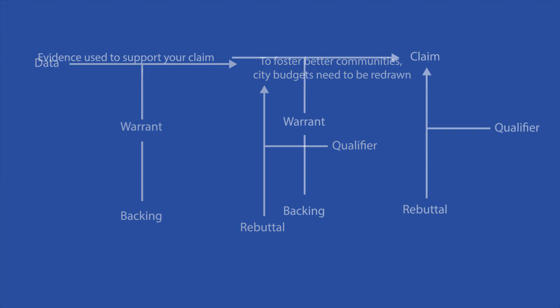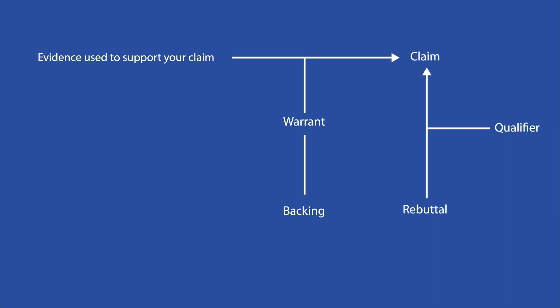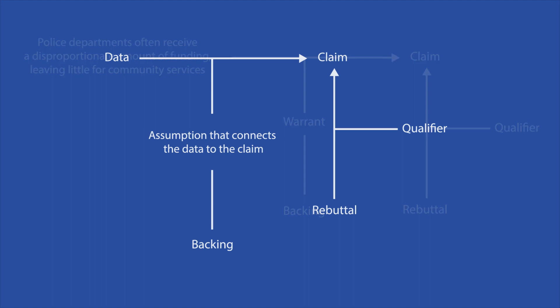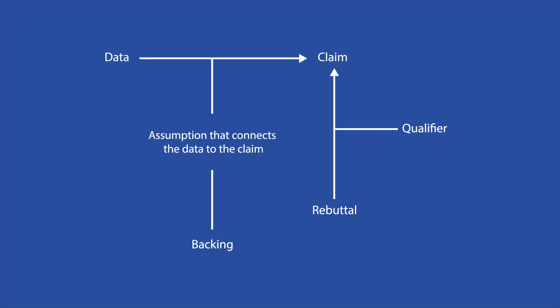Next is the data, sometimes referred to as the grounds. Data is the evidence used to support your claim. For our example claim, the data could be: "Police departments often receive a disproportionate amount of funding, leaving little for community services." Finally, there is a warrant, or assumption that connects the data to the claim. Warrants can be stated explicitly, but more often are unspoken assumptions. If no warrant can be made between the data and claim, you're presenting unrelated ideas and cannot make an argument out of them.